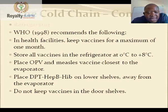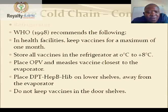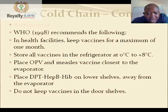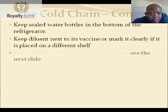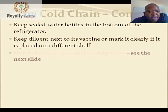The WHO in 1998 recommends that in health facilities, vaccines are kept for a maximum of one month. Store vaccines in the refrigerator at 0 to positive 8 degrees Celsius, placing OPV and measles vaccine closest to the evaporator, placing DPT on lower shelves away from the evaporator, and not keeping vaccines in the door shelves. Keep sealed water bottles in the bottom of the refrigerator and keep diluent next to its vaccine or mark it clearly if placed on a different shelf.